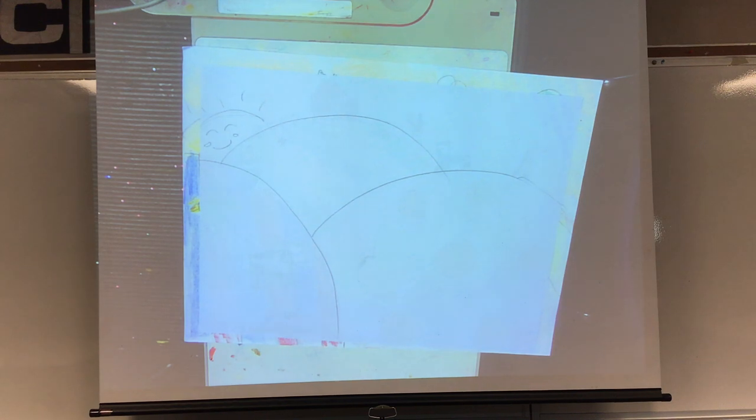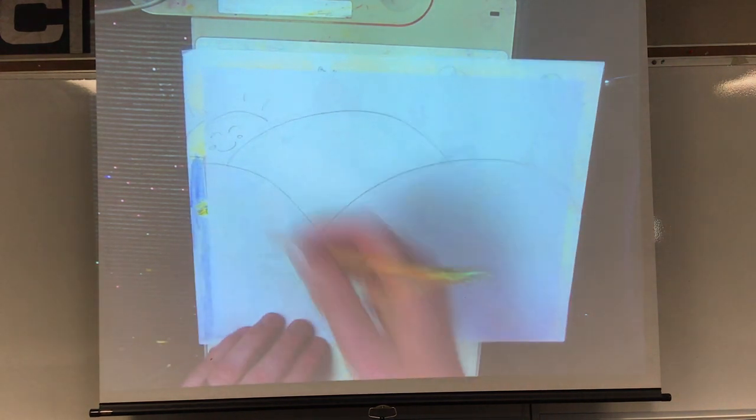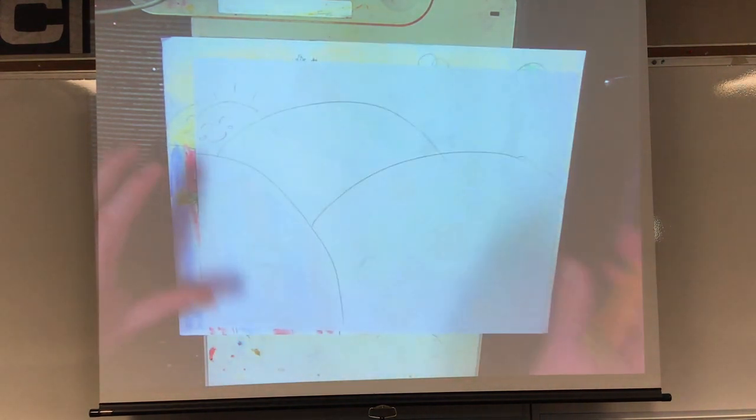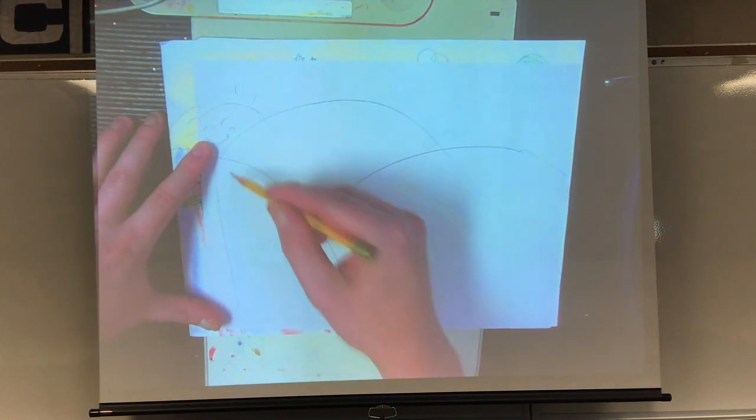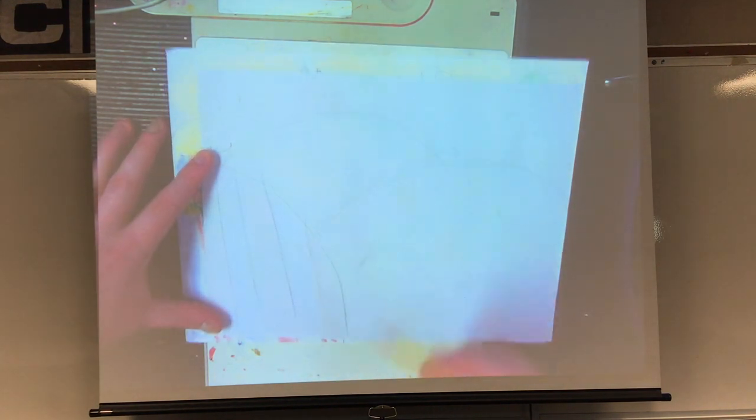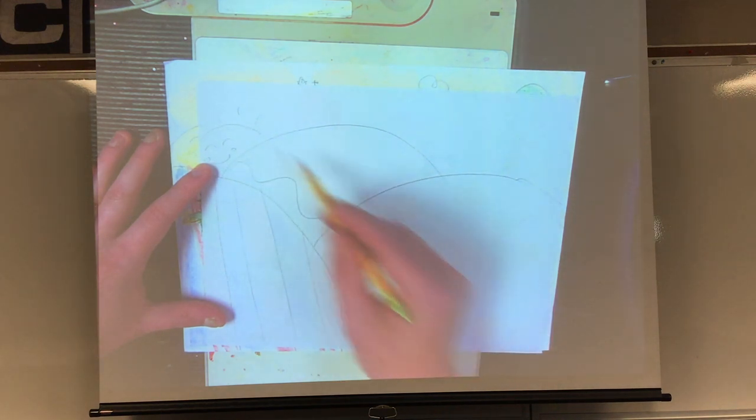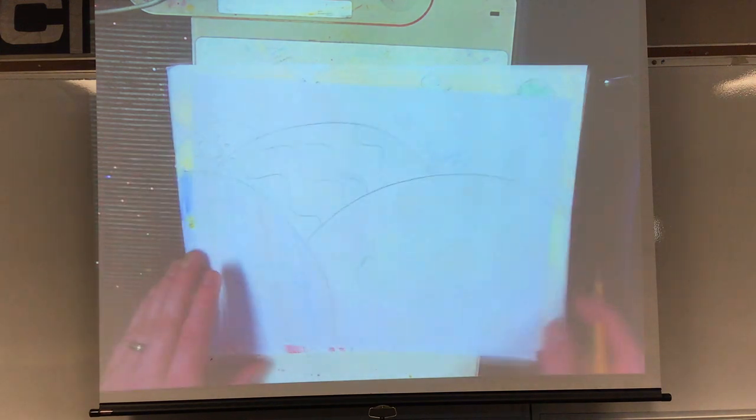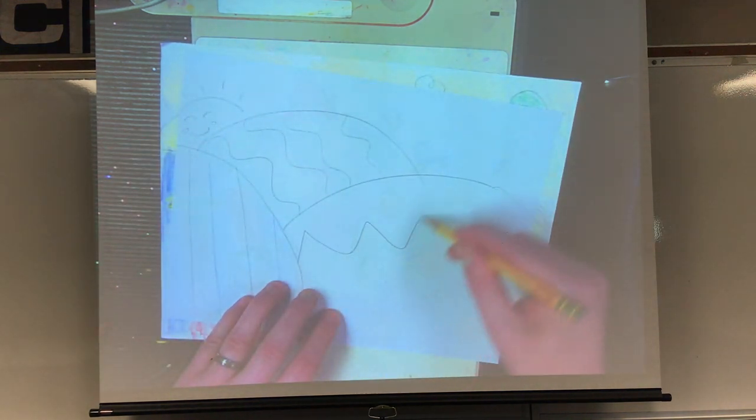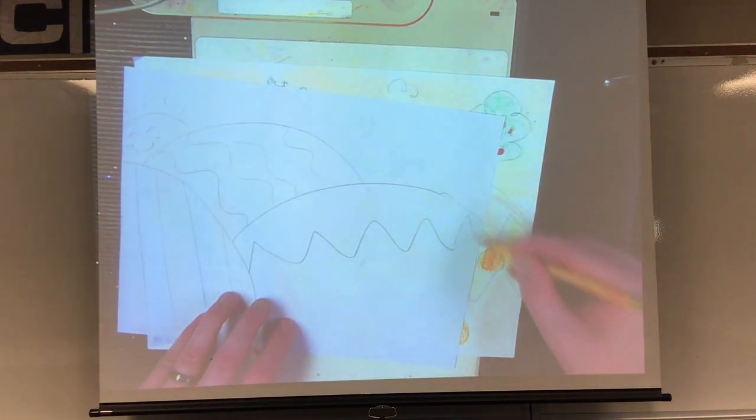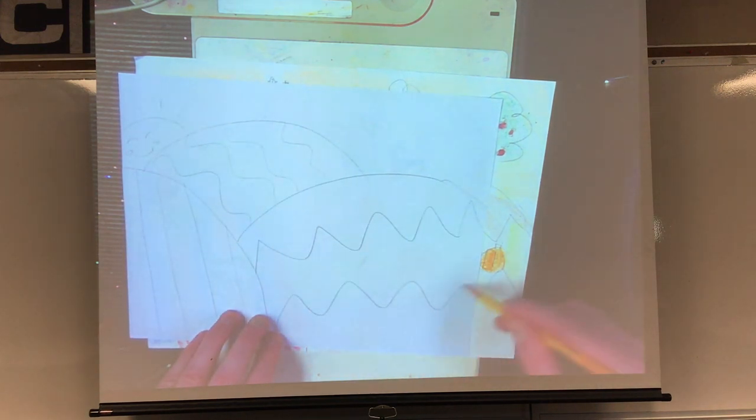So now what you need to do is you need to come up with lines and patterns for your designs for your hills. So I want to see three different types of lines. So I'm going to do straight lines over here. I'm going to do wavy lines over here. And then I'm going to do zigzags over here.